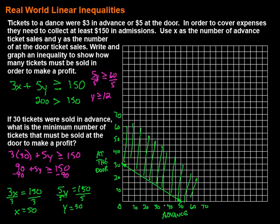We could also use this graph to figure out any combination. For instance, if we sold 20 in advance and 50 at the door, we can see from the graph that that's going to get us the profit we need. Or, say 10 at the door — we'd need to sell at least 35 to 40 in advance. All of those amounts we can see without even calculating anything, just by making use of the graph. The picture's worth a thousand words.